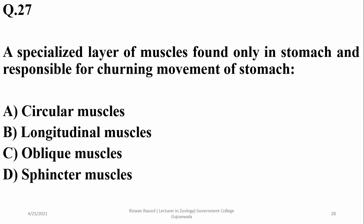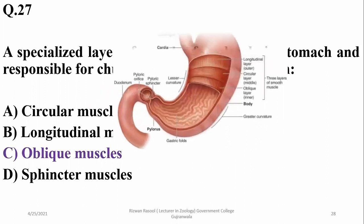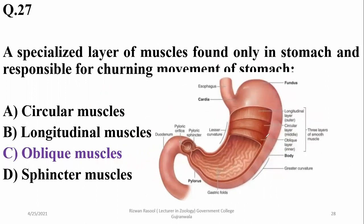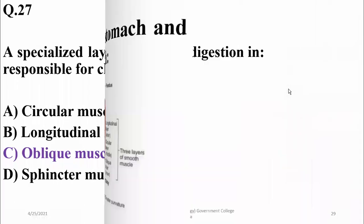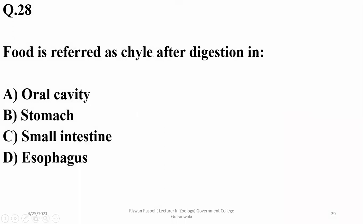A specialized layer of muscles found only in the stomach and responsible for churning movement is the oblique layer of muscles, which is not found in other parts of the digestive tract. This layer is specific to the stomach and is concerned with the churning or mixing process. In the small intestine, food is referred to as chyle after digestion and absorption.